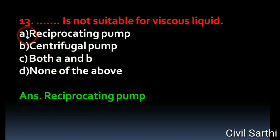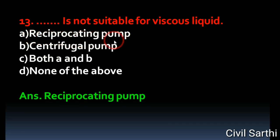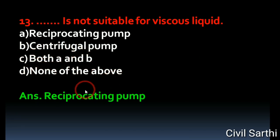Question No.13: Dash is not suitable for viscous liquid. Option A: Reciprocating Pump. Option B: Centrifugal Pump. Option C: Both A and B. Option D: None of the above. The right answer is Reciprocating Pump.